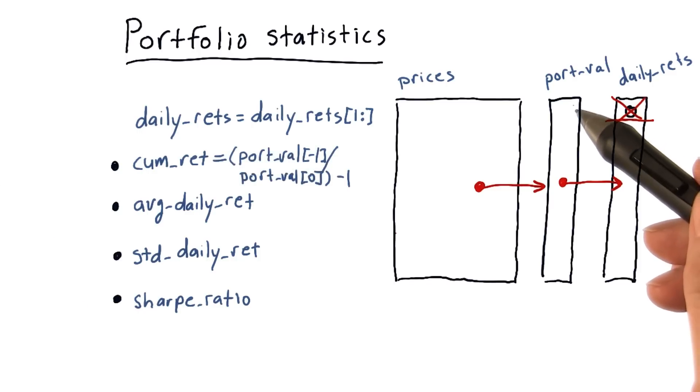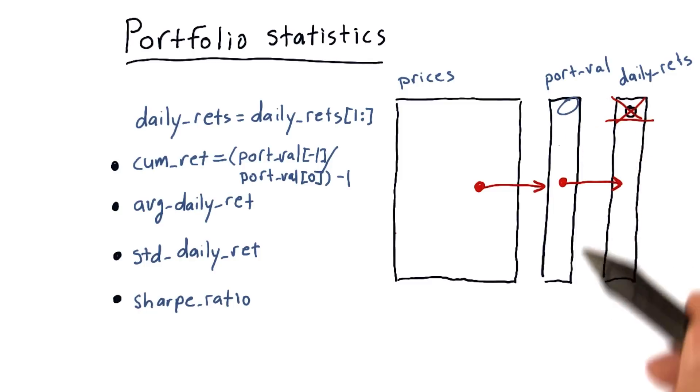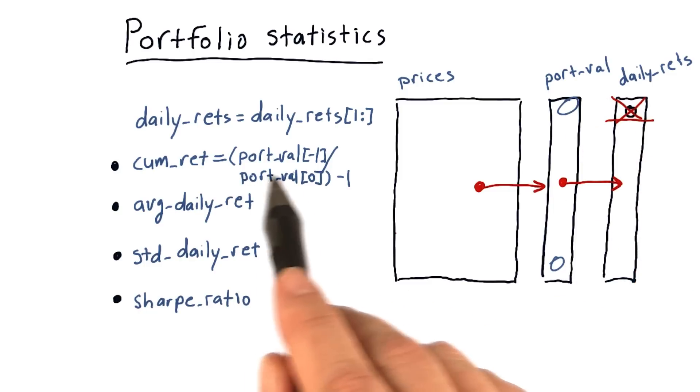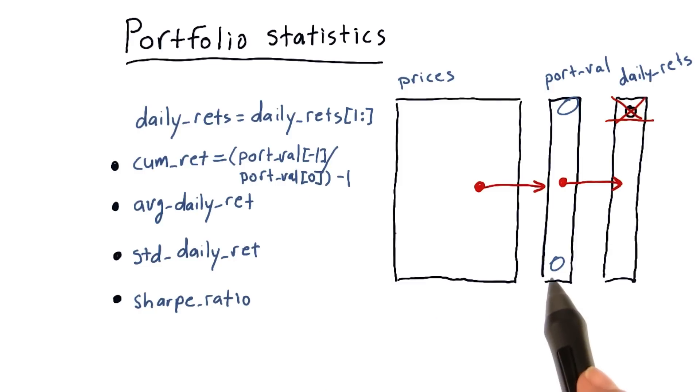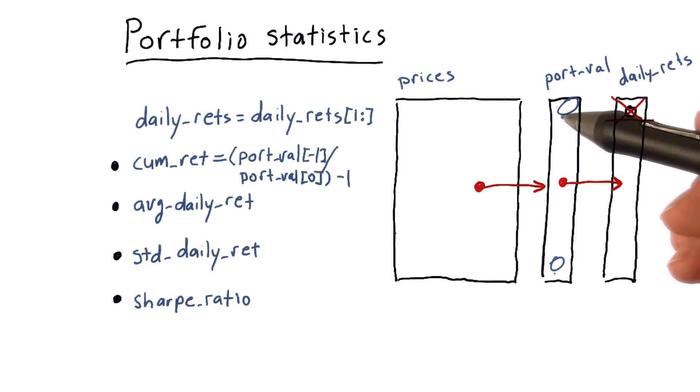Cumulative return is just a measure of how much the value of the portfolio has gone up from the beginning to the end. So to calculate that, we take the last value, which is port val of minus 1, which is this one, divide it by the beginning, and subtract 1.